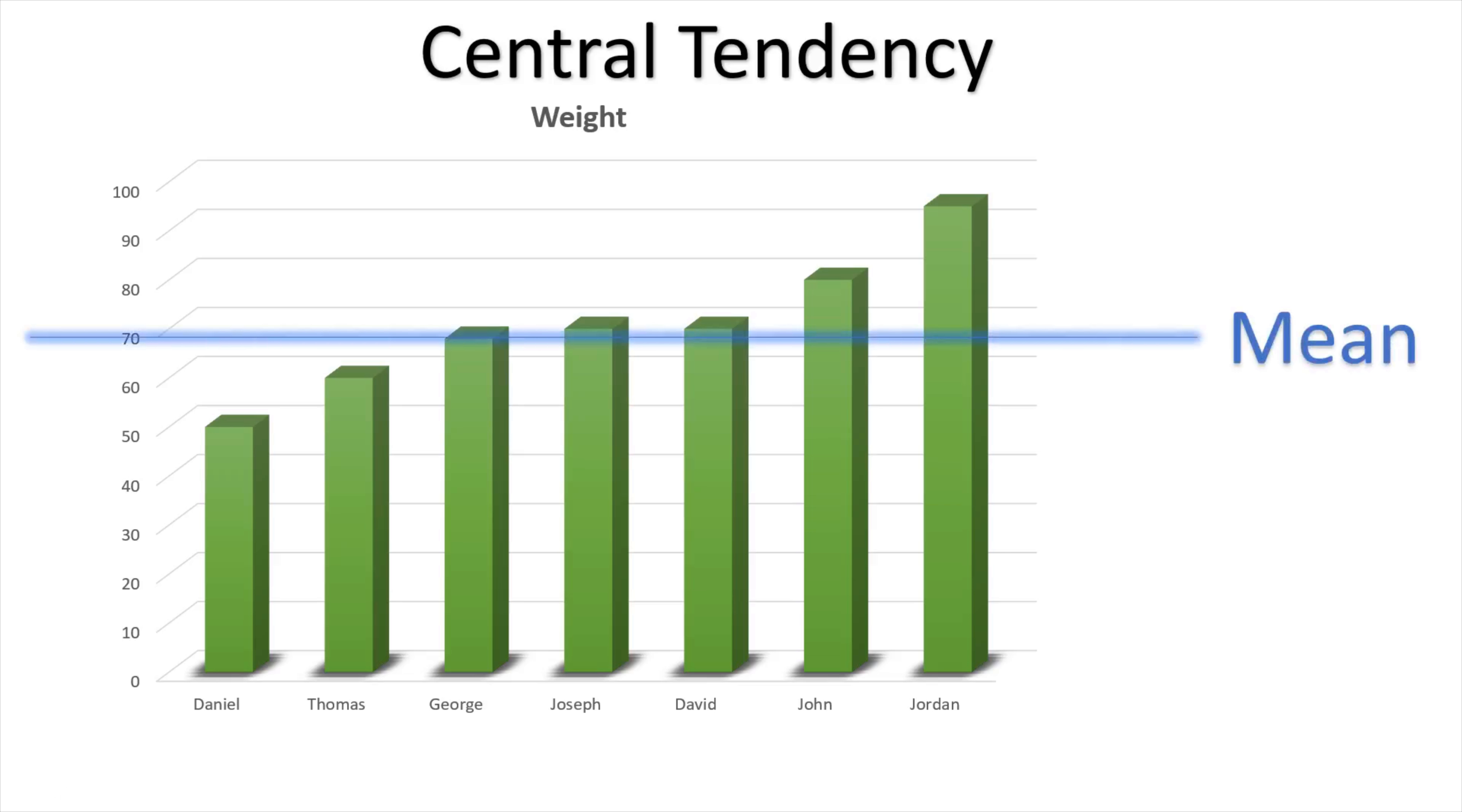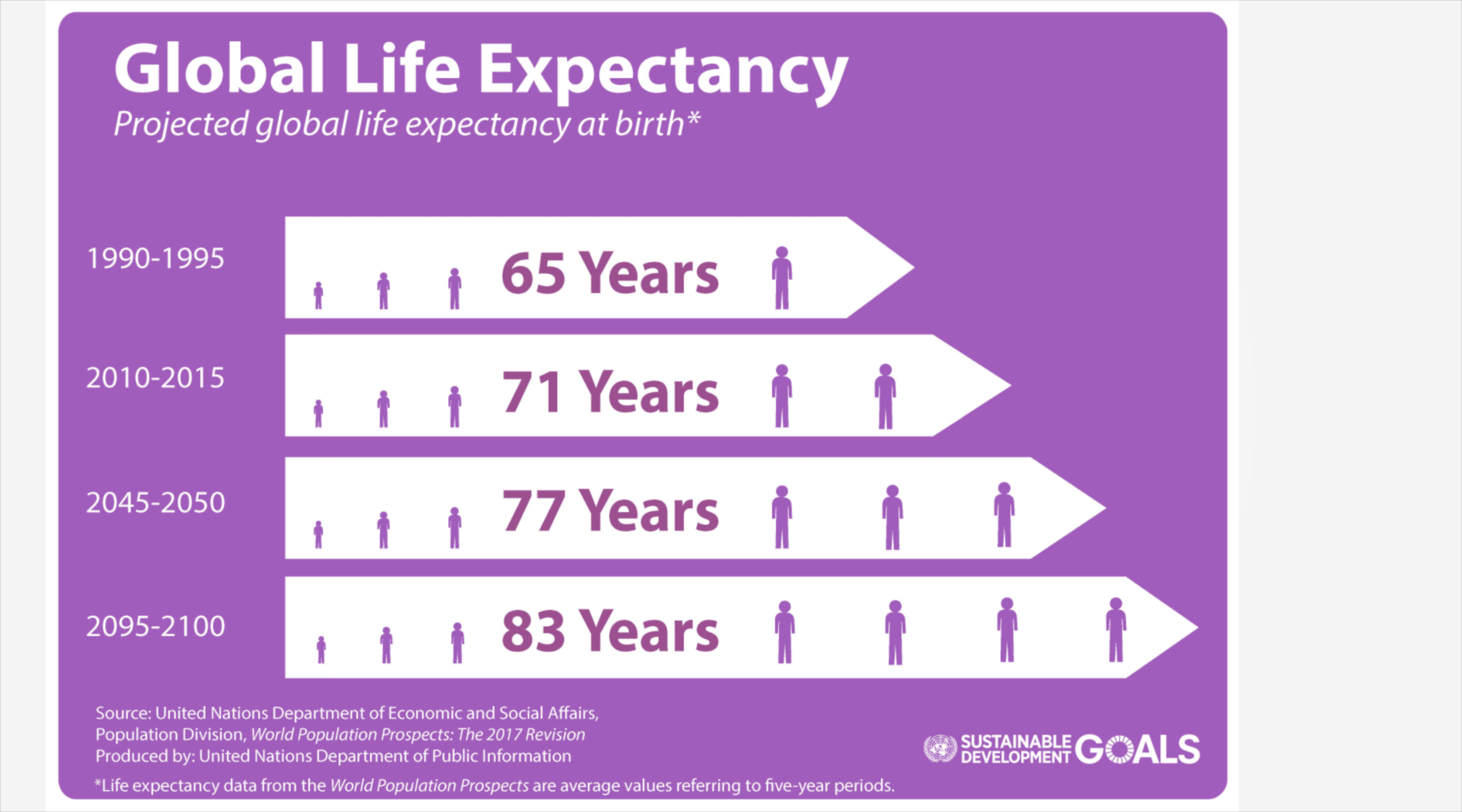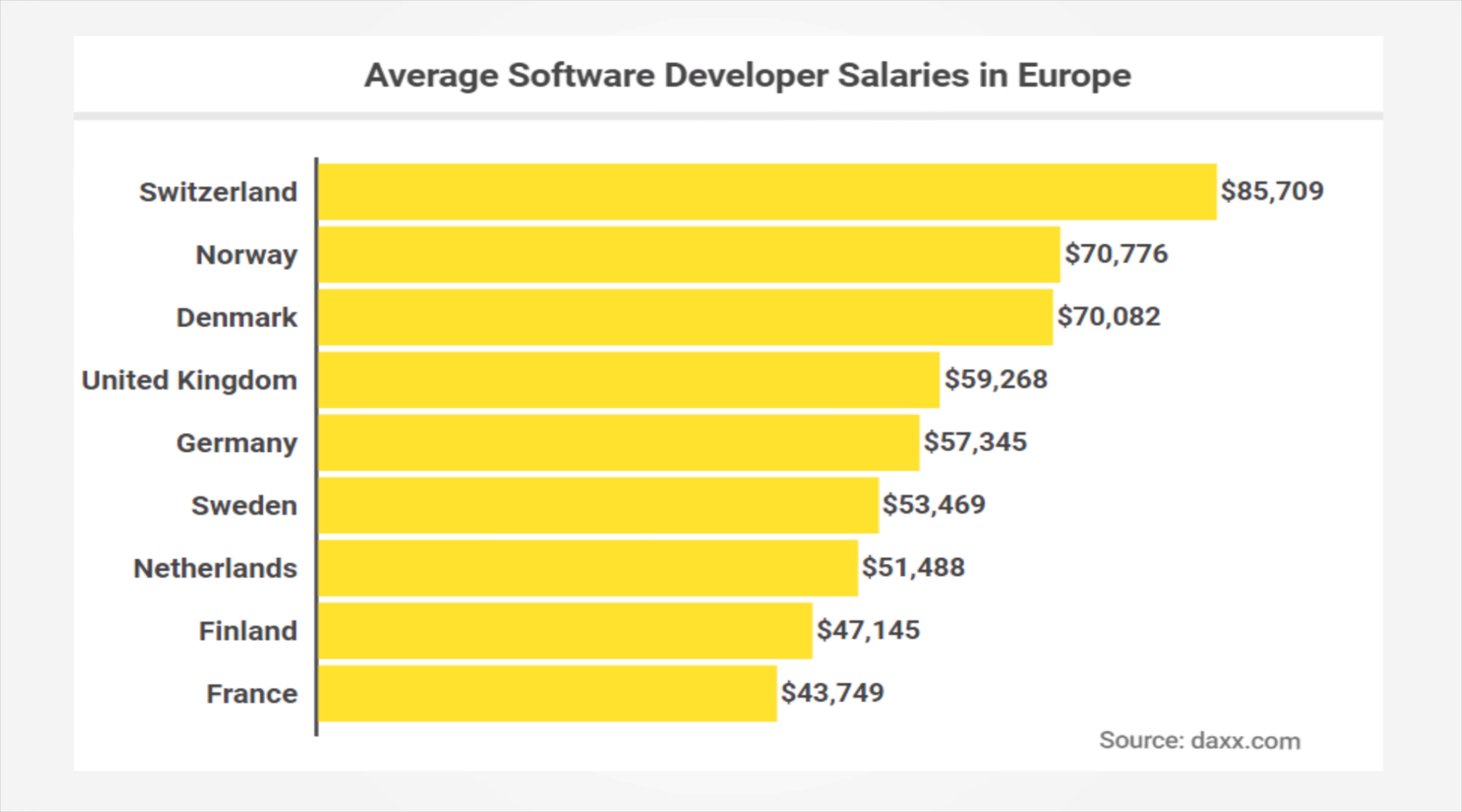There are three measures of central tendency. They are the mean, the median, and the mode. This gets a lot of attention when we want to see how the wide audience reacts, like average life expectancy, average income for a particular country or state.